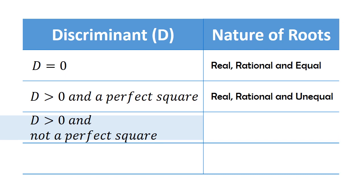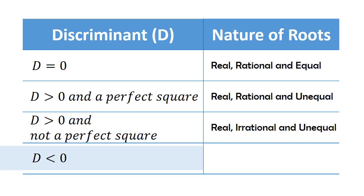Third, if the discriminant is greater than zero and not a perfect square — or simply, the discriminant is positive and not a perfect square — the nature of the two roots are real, irrational, and unequal. And fourth, if the discriminant is less than zero, meaning it is negative, the nature of the two roots are not real, or we can say it's imaginary.